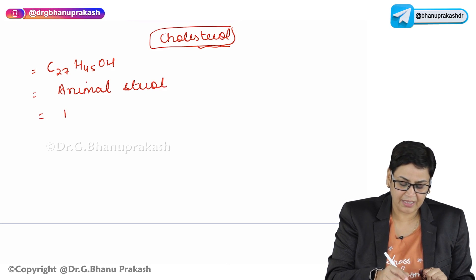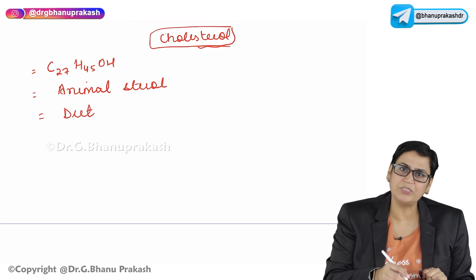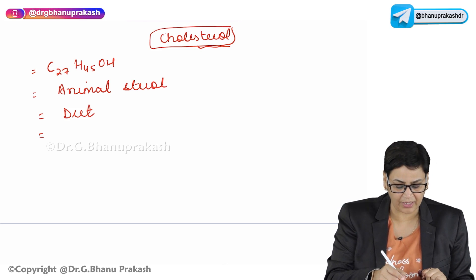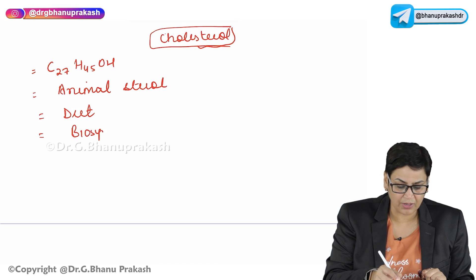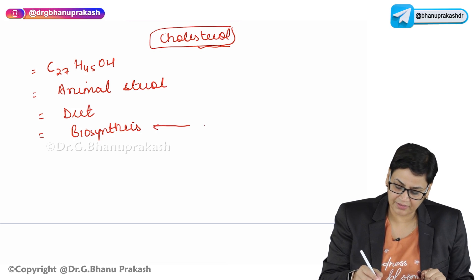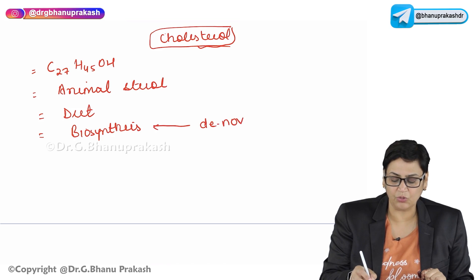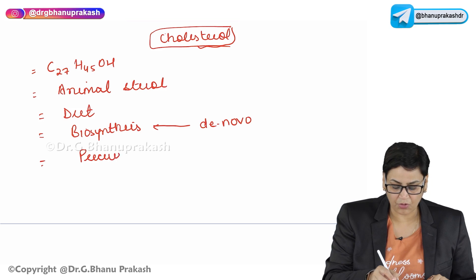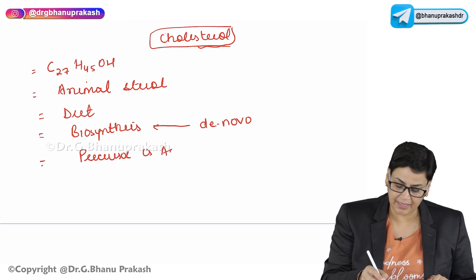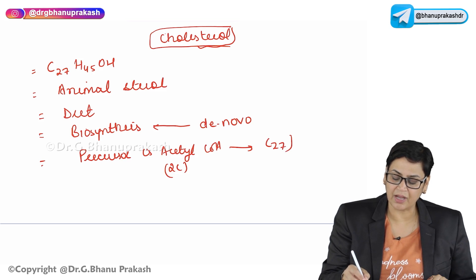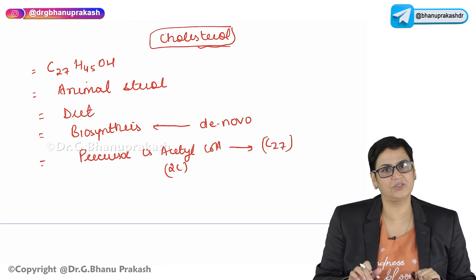We know that we take cholesterol in the diet, and the most interesting part is that it is also synthesized in the body. The biosynthesis of cholesterol takes place by a de novo process, synthesizing cholesterol from acetyl coenzyme A which has 2 carbon atoms, to cholesterol which has 27 carbon atoms.